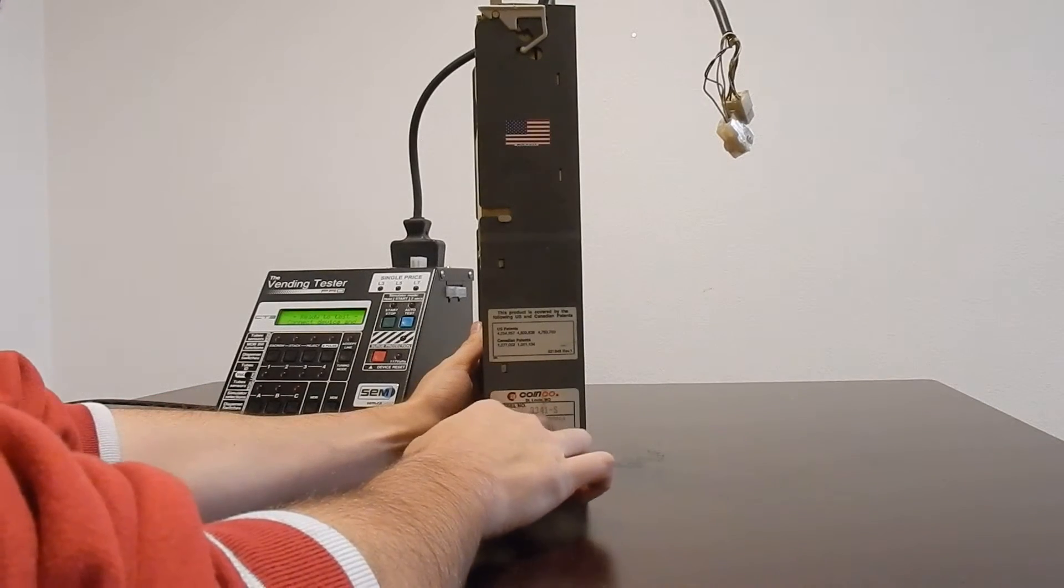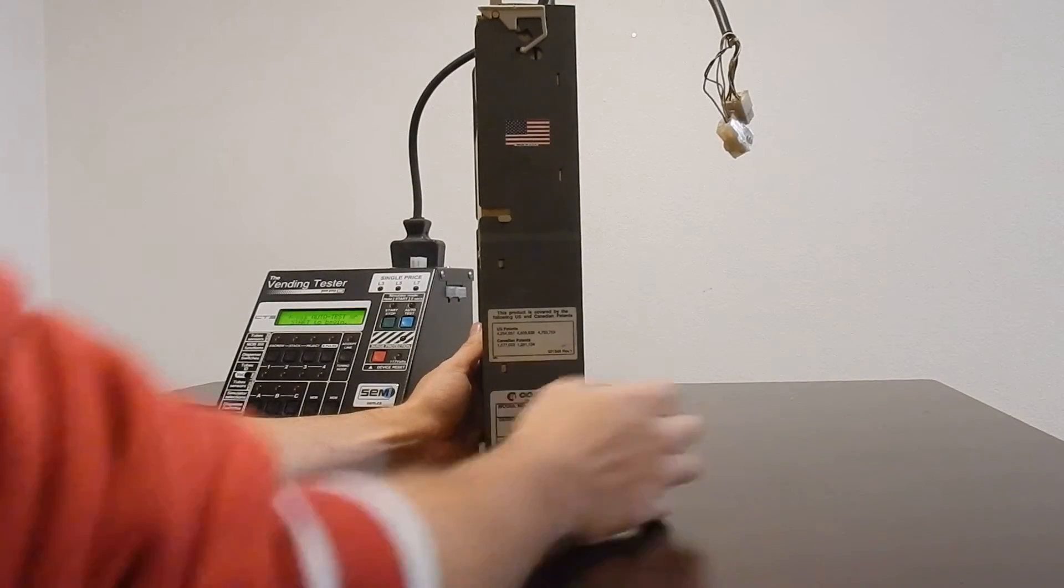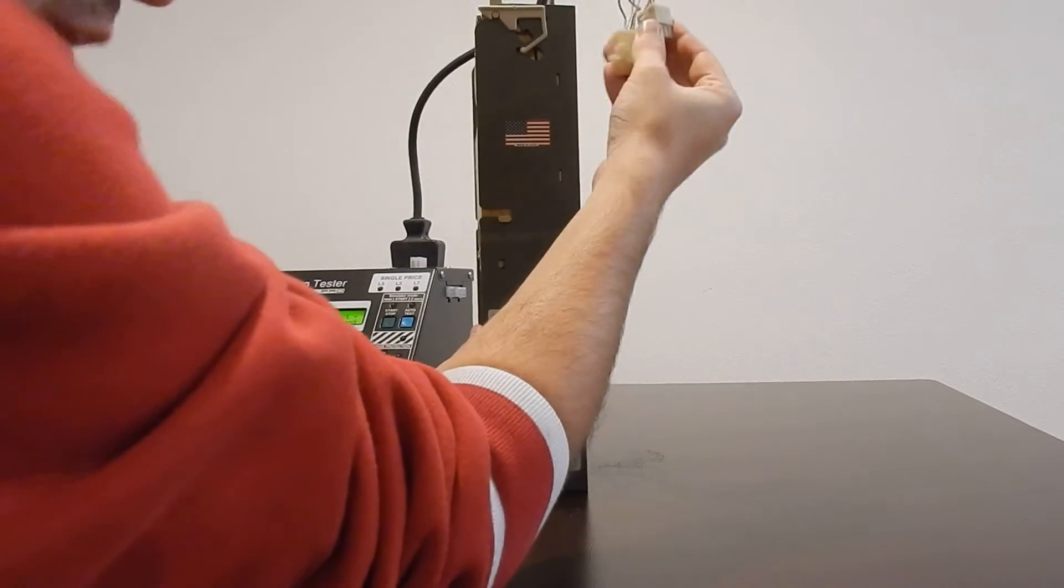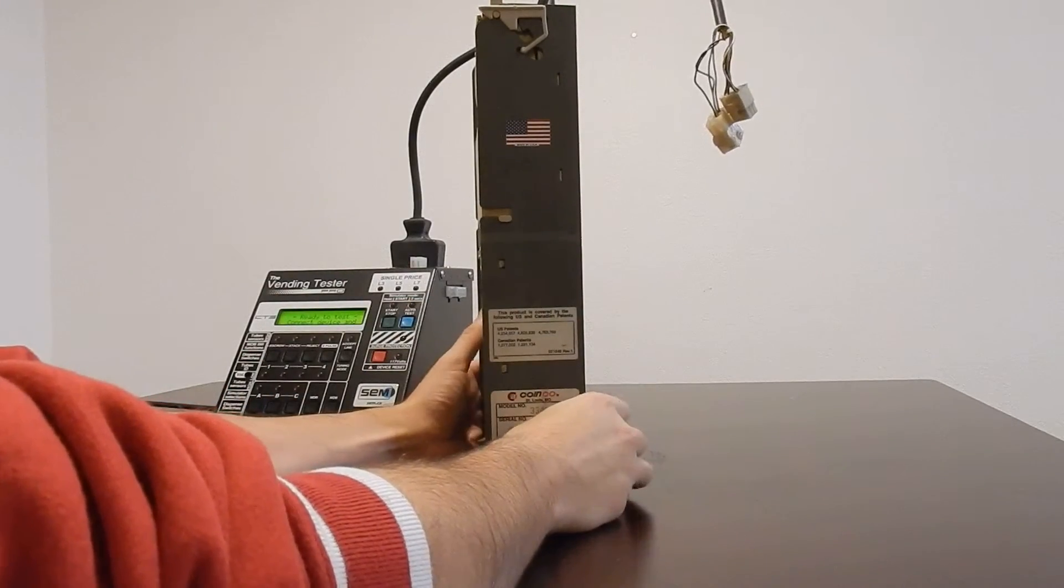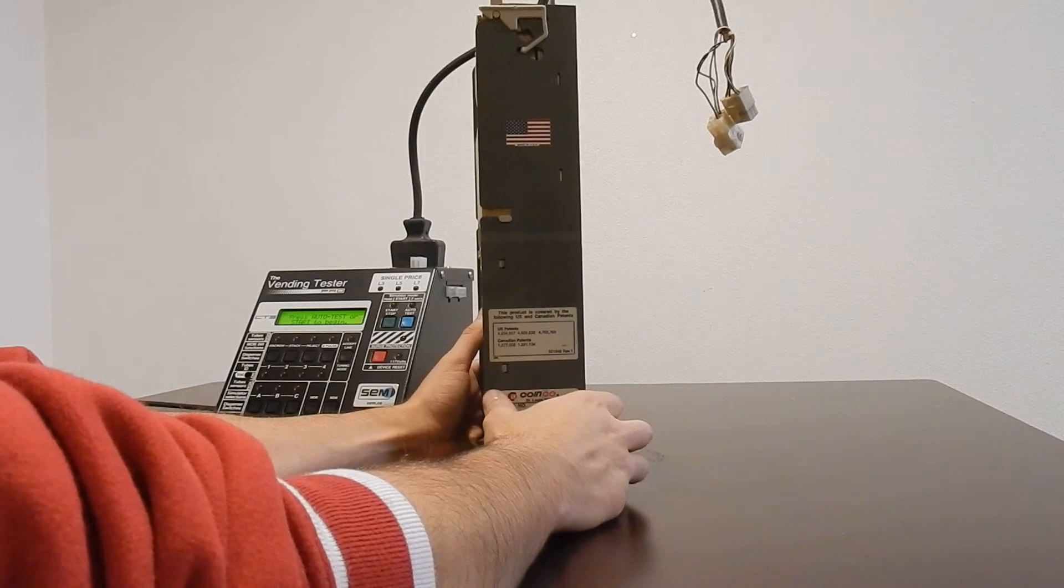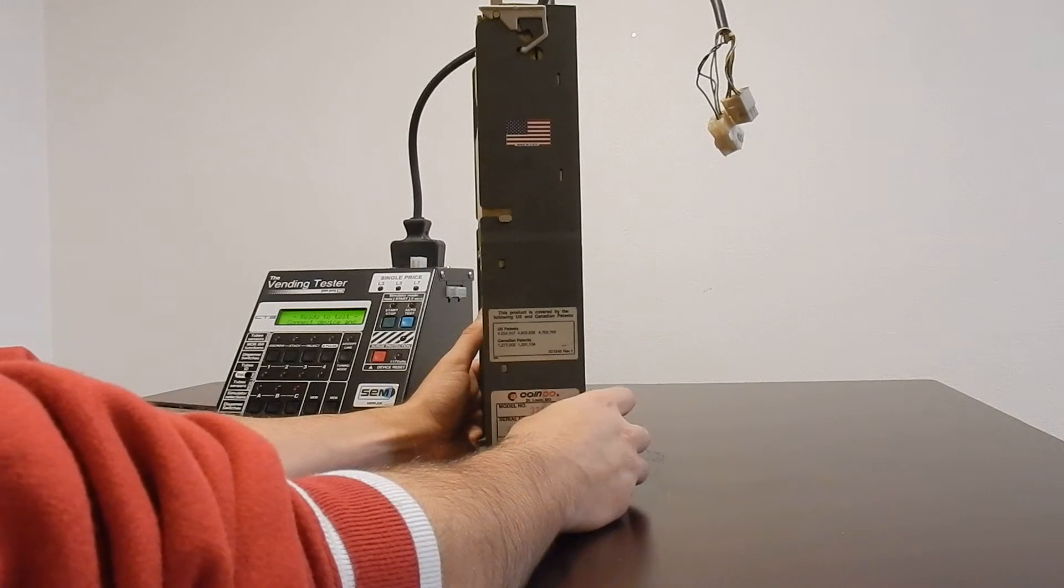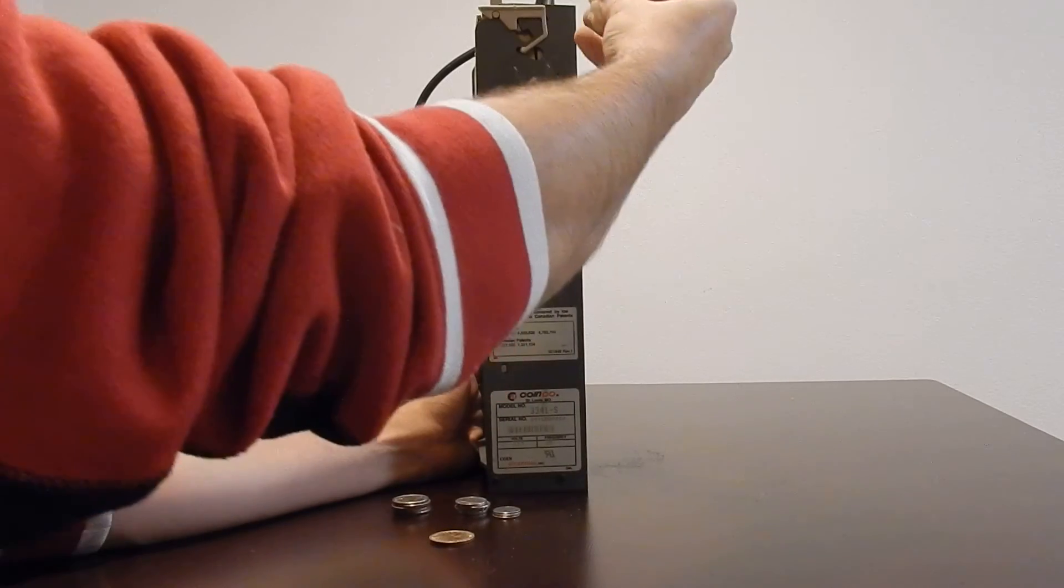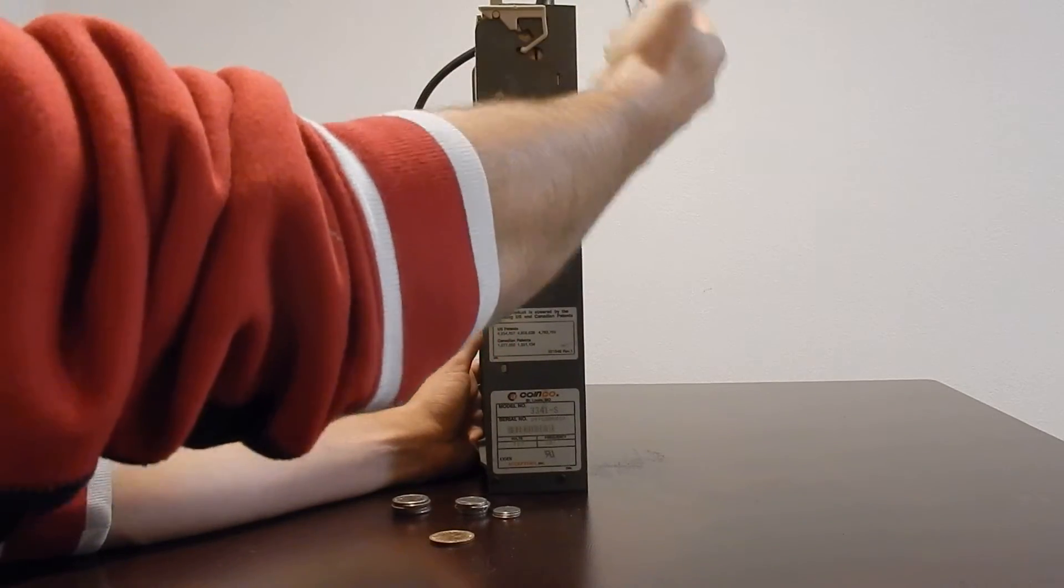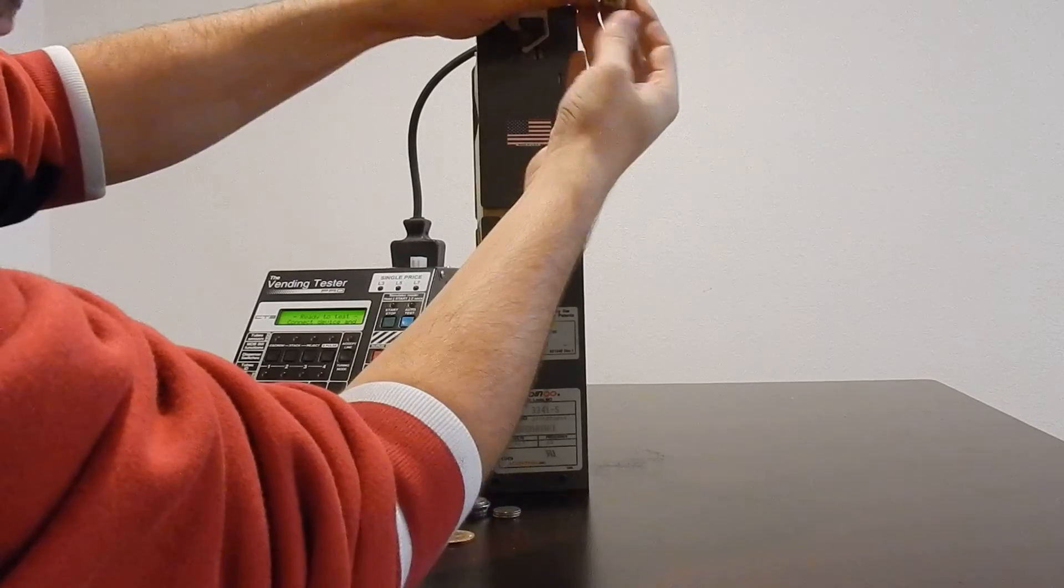There is a 3341S which has the Mars and CoinCo bill validator plugs on top. There is a 9600S and a 9730S which also have the Mars and CoinCo bill validator plugs.